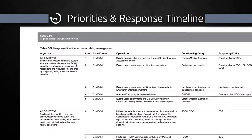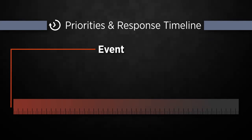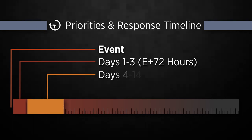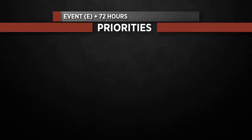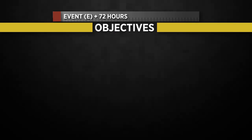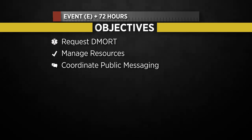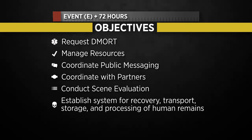Look to your plan's response timeline as a guideline for supporting the coroner's objectives within each disaster response time period. Operational response is focused on the first 60 days following an event, broken into three distinct time periods: the first three days, or 72 hours; day 4 through 14; and the six-week span between day 15 and day 60. Priorities within the first three days are to support establishing Family Assistance Centers and establishment of a mass fatality management system. Primary objectives include coordinating with the coroner to request DMORT, receive and submit resource requests, coordinate with the PIO and JIC for public messaging, coordinate operations with partner agencies, conduct scene evaluations at all mass fatality locations, establish the system for the recovery, transport, storage, and processing of human remains, and establish Family Assistance Center operations.